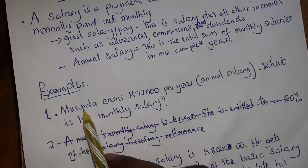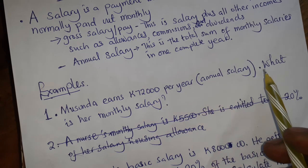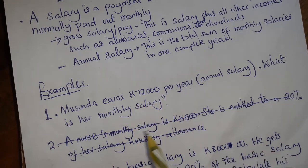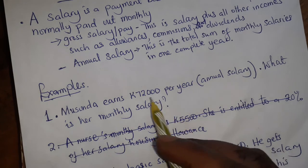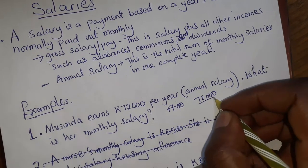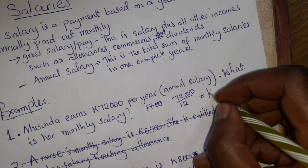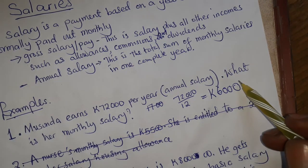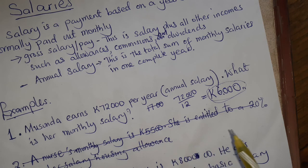Here is an example. Musonda earns 72,000 per year — that is her annual salary. What is her monthly pay? If this is her annual salary, it is spread over 12 months, so you divide by 12. 72,000 divided by 12 gives us 6,000 per month. And if we are told that this is her monthly salary, to get the annual salary you multiply the monthly salary by 12.